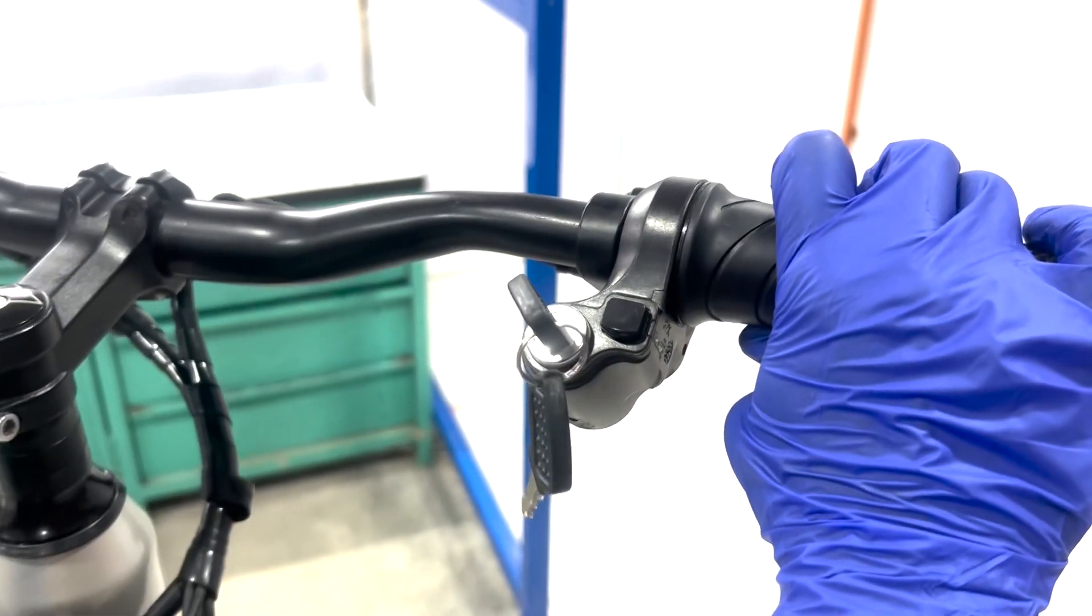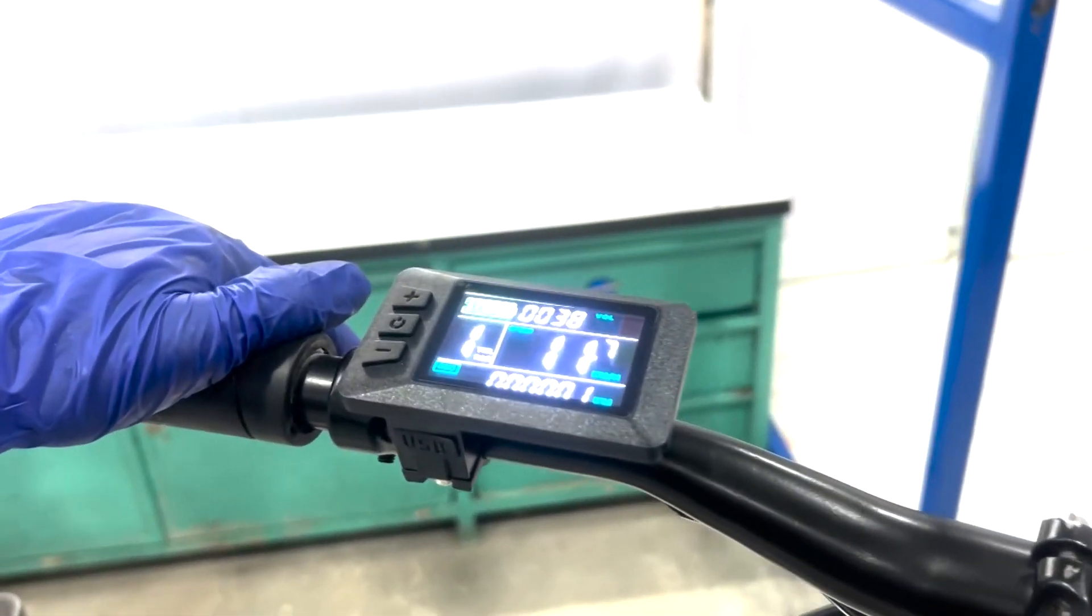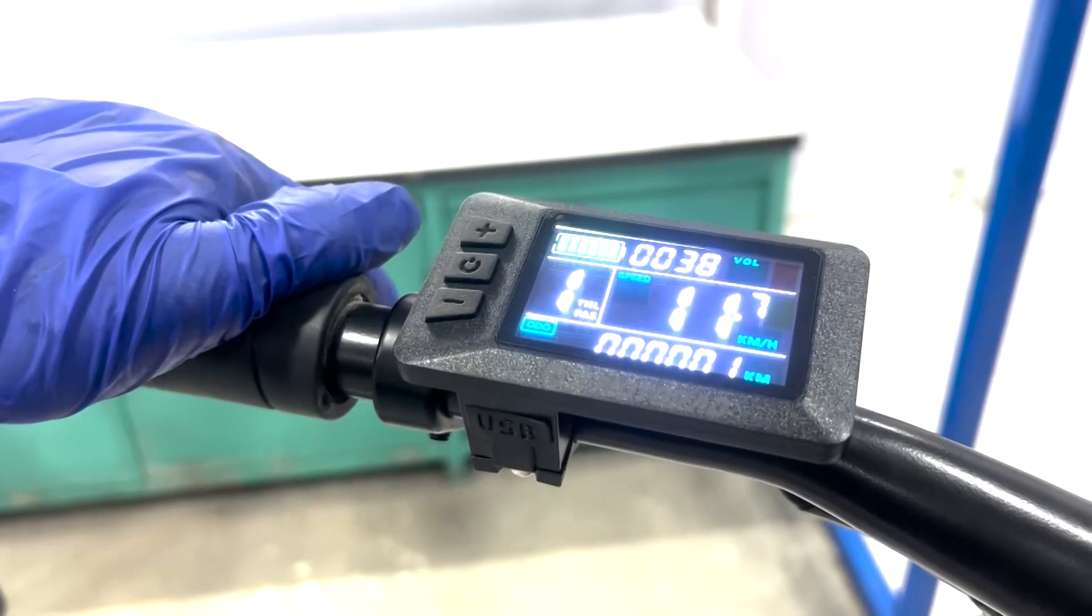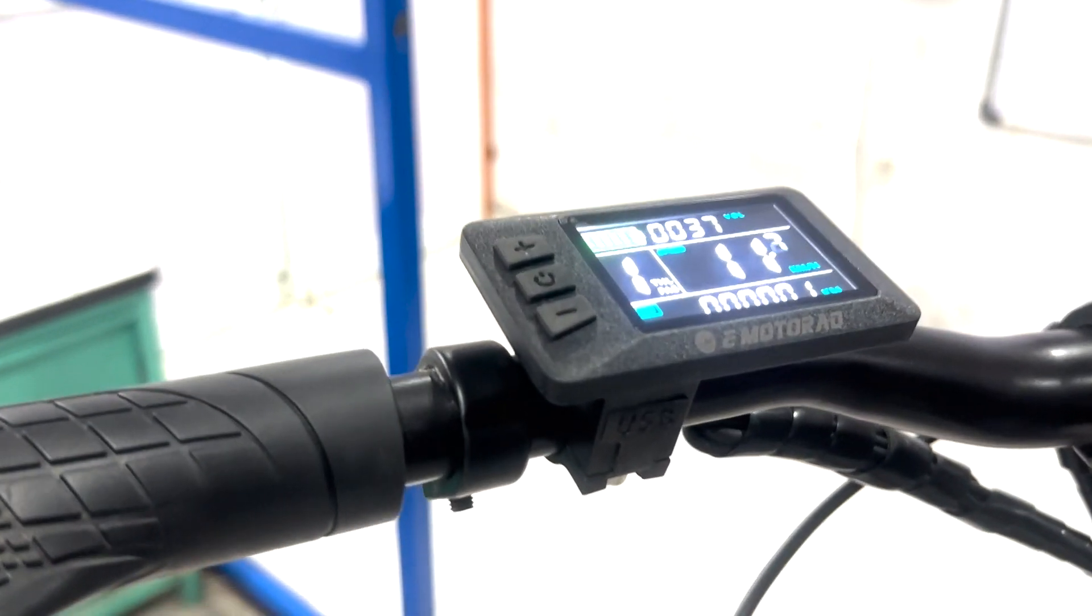If all functions are working as expected, you have successfully installed the new controller and battery in your X3 e-bike. And that's it. You've now learned how to remove and install the controller and battery in an X3 e-bike. Thank you and ride safe.